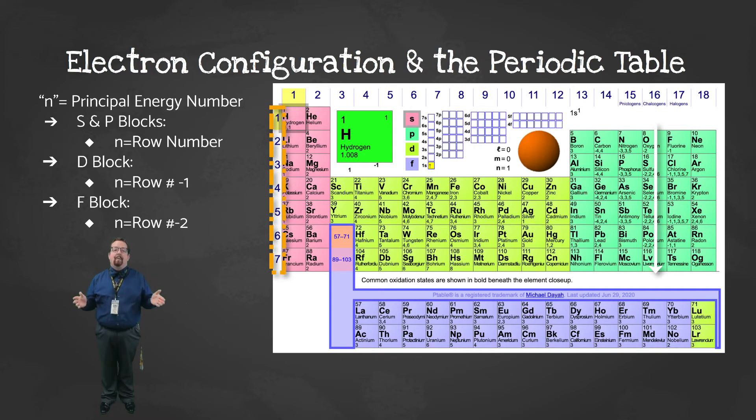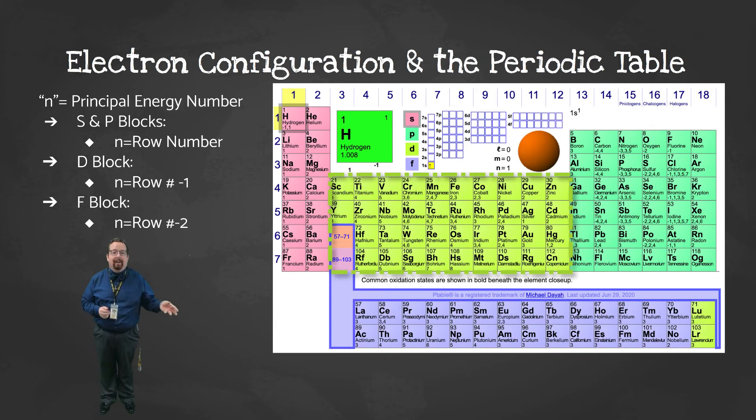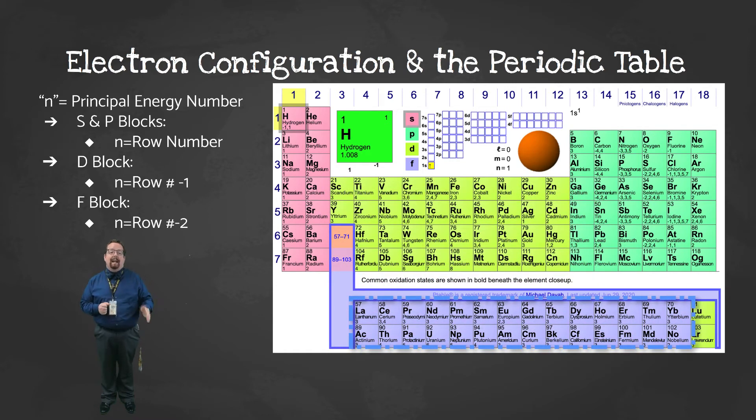The rest of the table works the same exact way, except the D block in the middle, mostly the transition metals, their principal energy level is 1 less than the row it's in. And the F block's principal energy level, the lanthanides and actinides clear at the bottom, is 2 less than the row it's in. Some elements are really tricky and don't follow all of the rules for electron configuration, but you won't be asked about those on the AP exam. For the most part, you can assume that the elements you're asked about will follow the same general rules, and you can determine the electron configuration completely based on the element's location on the periodic table.